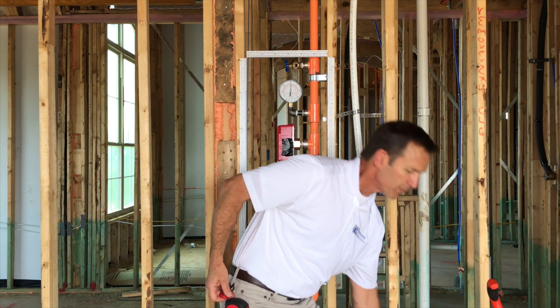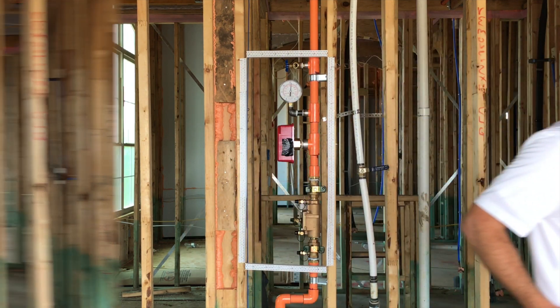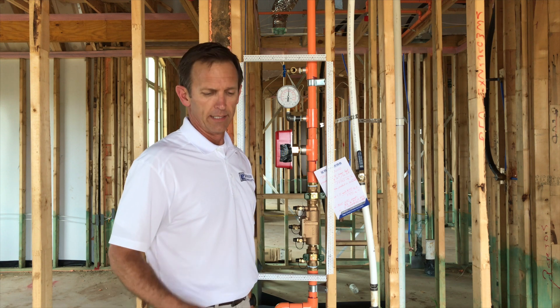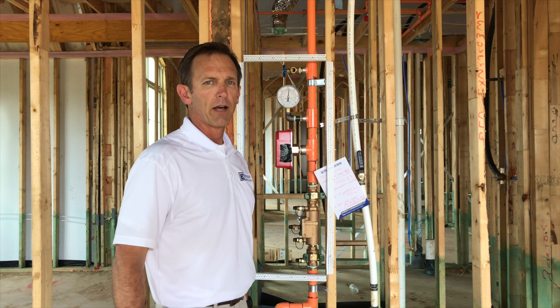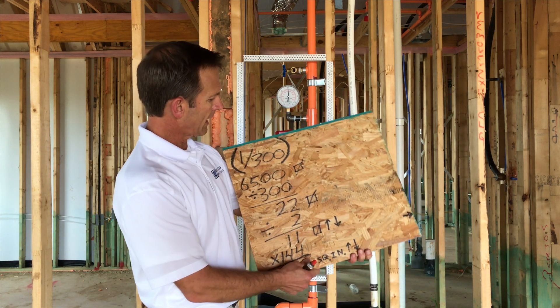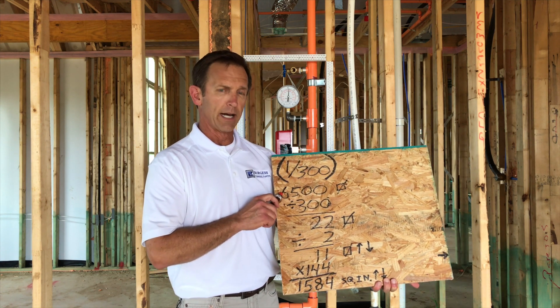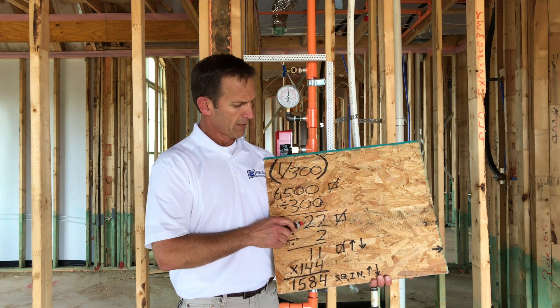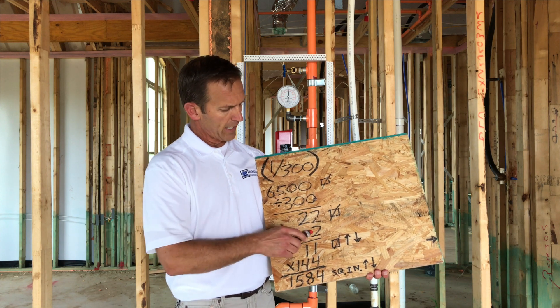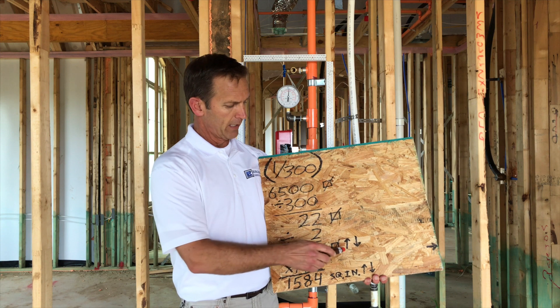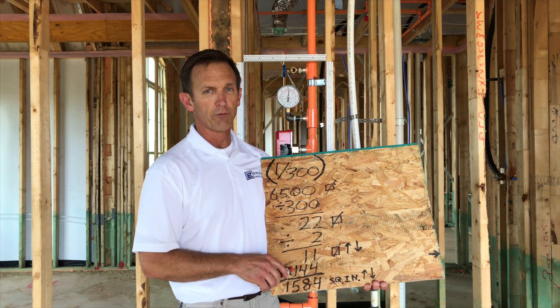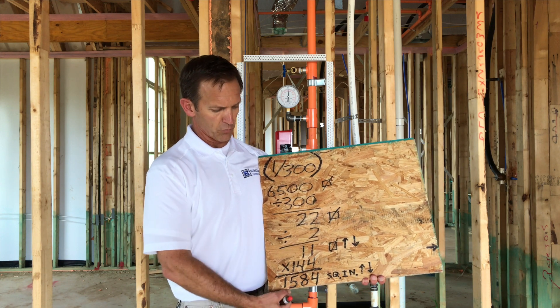I want to show you a quick, easy way to do the math on ventilation, whether you're working off plans or a partially or fully constructed home. This is a large house of 6,500 square feet. Because of when and how it was permitted and the climate zone, we can apply the 1 per 300 square foot rule. You take 6,500 divided by 300, which gives 22 square feet total ventilation. Divide by 2 to get upper and lower: we need 11 square feet each. Multiply 11 by 144 square inches per square foot, which gives us 1,584 square inches needed in both the lower and upper vents.